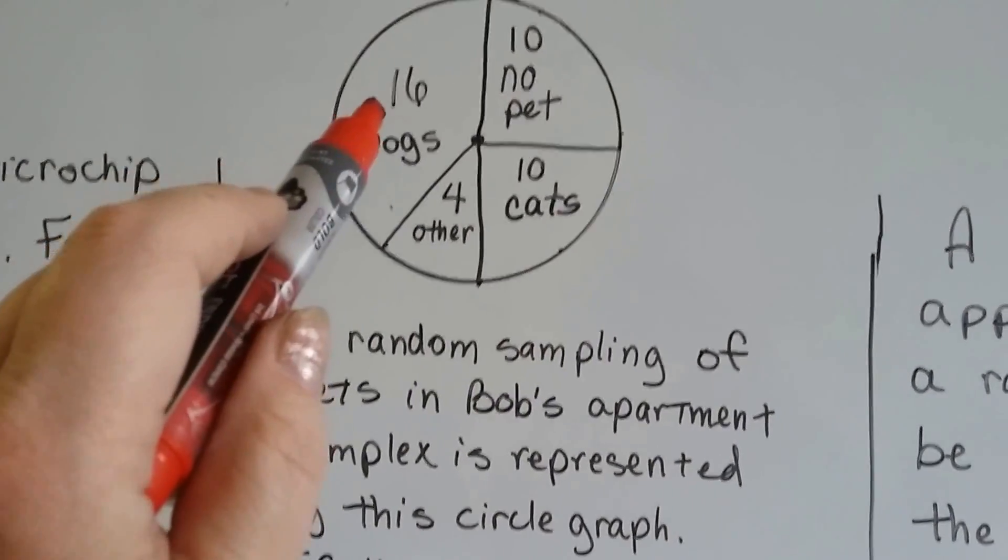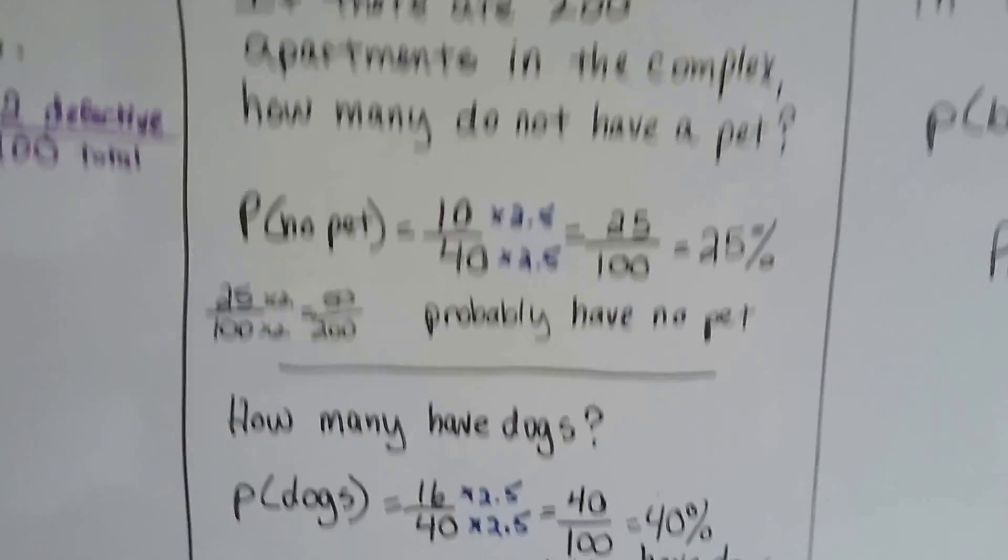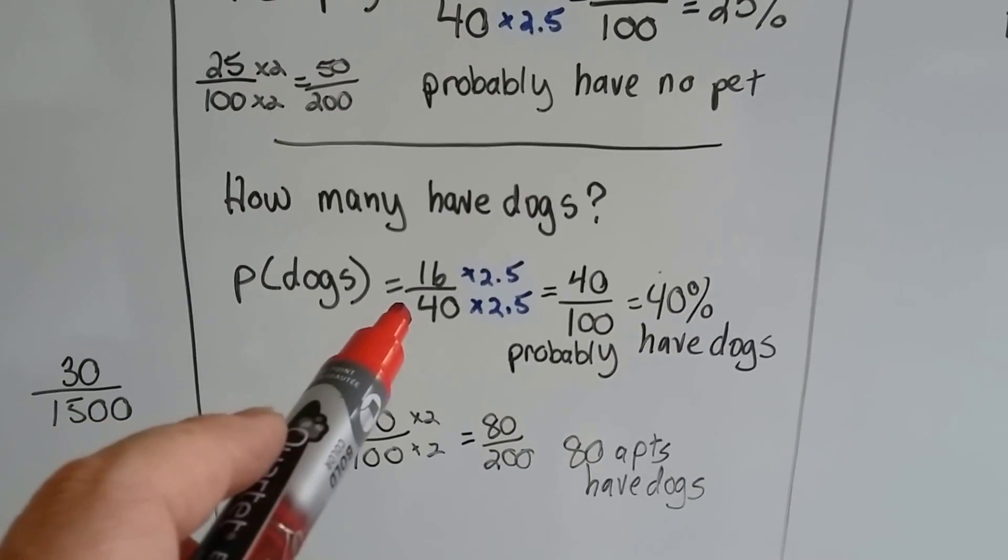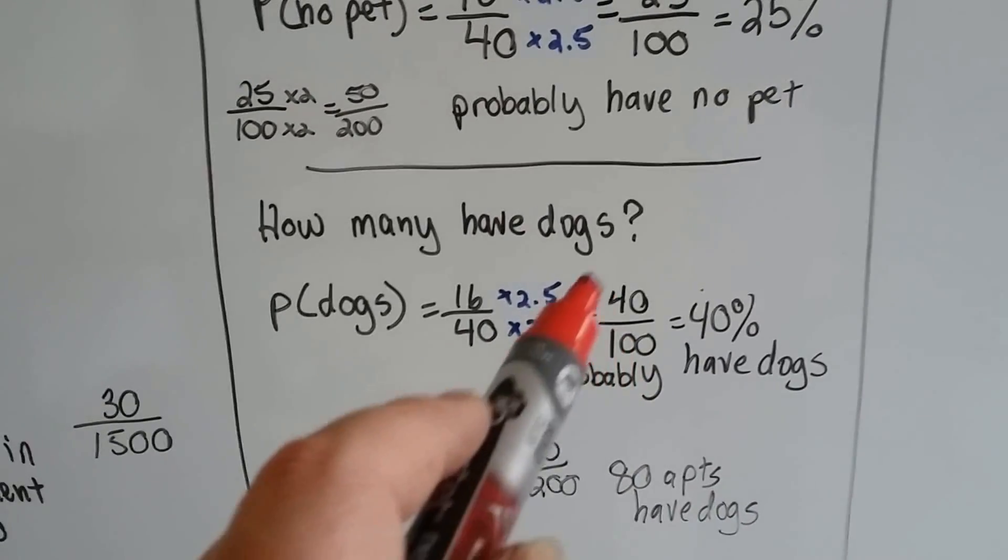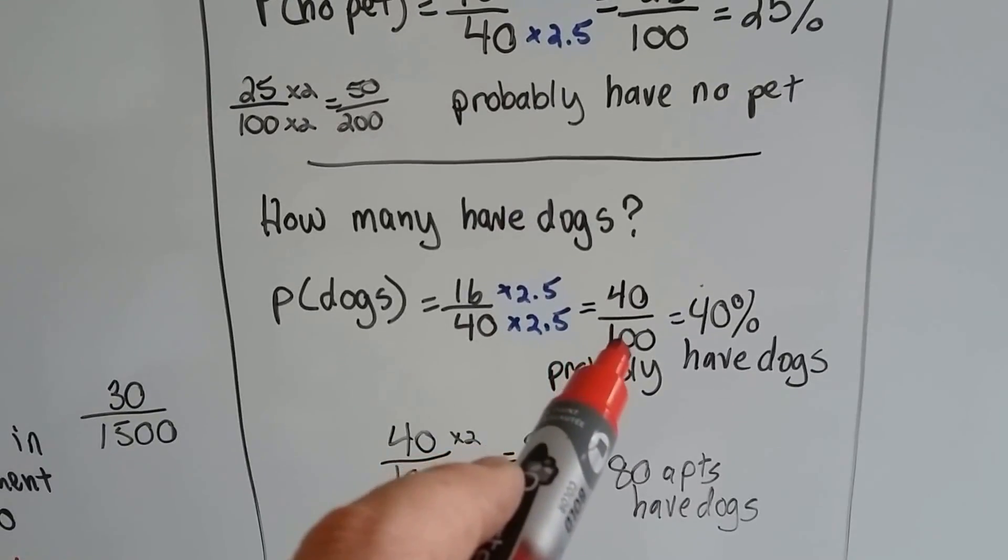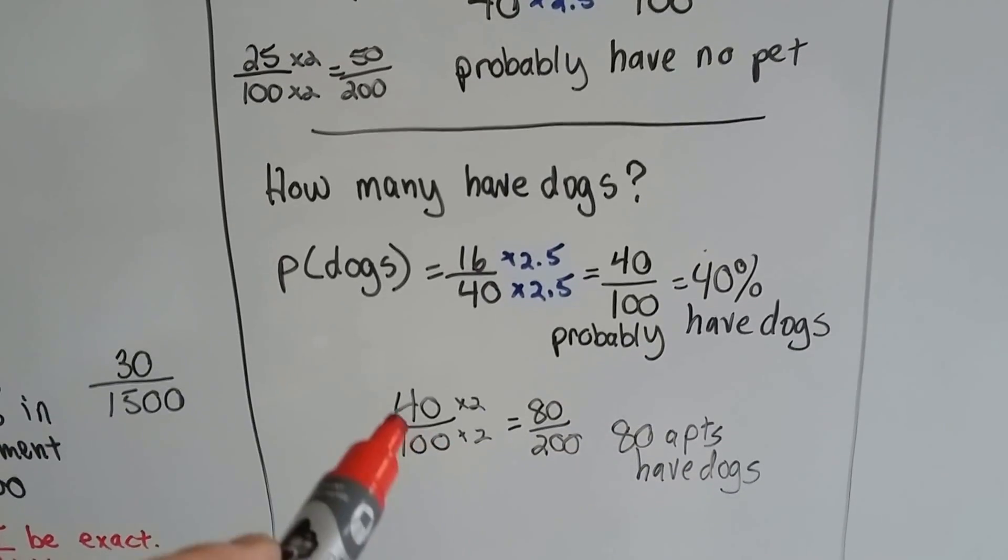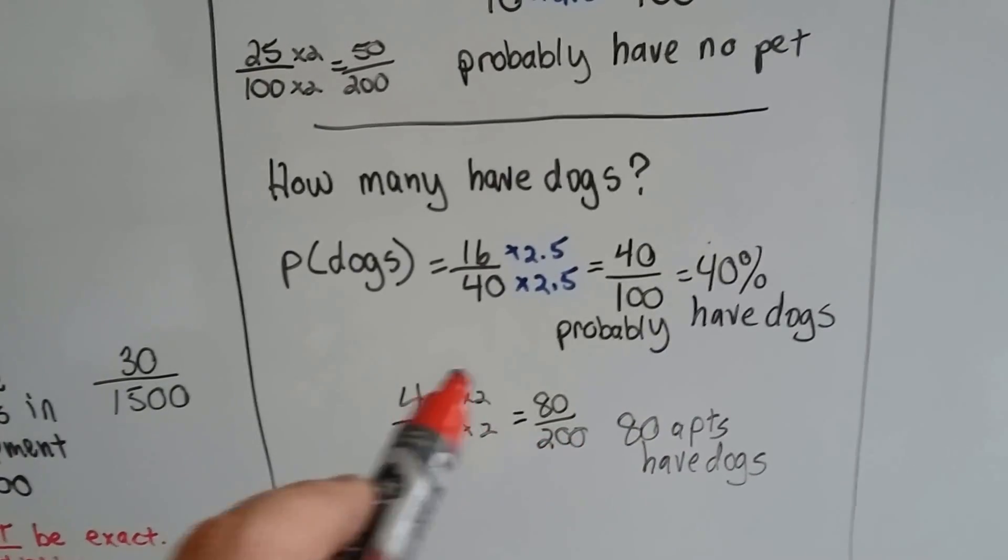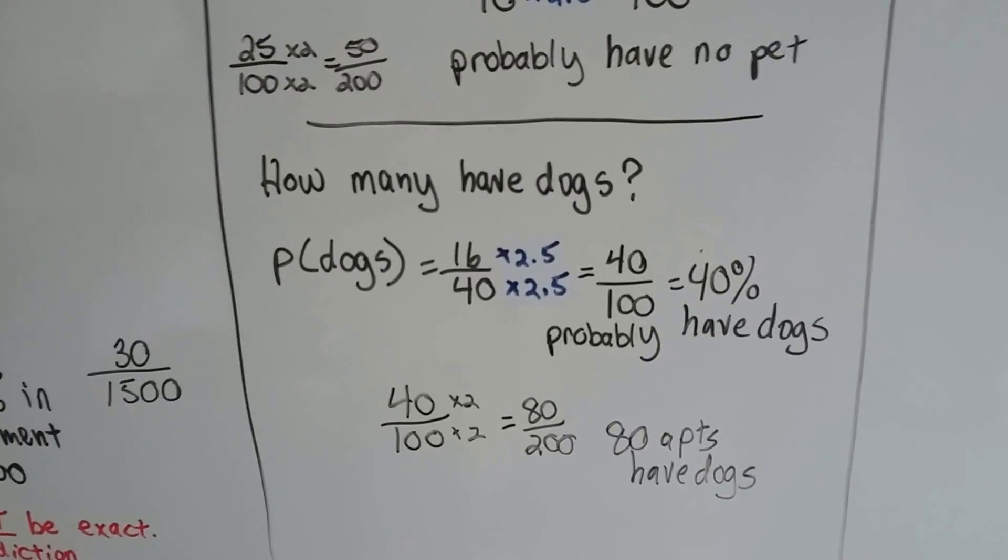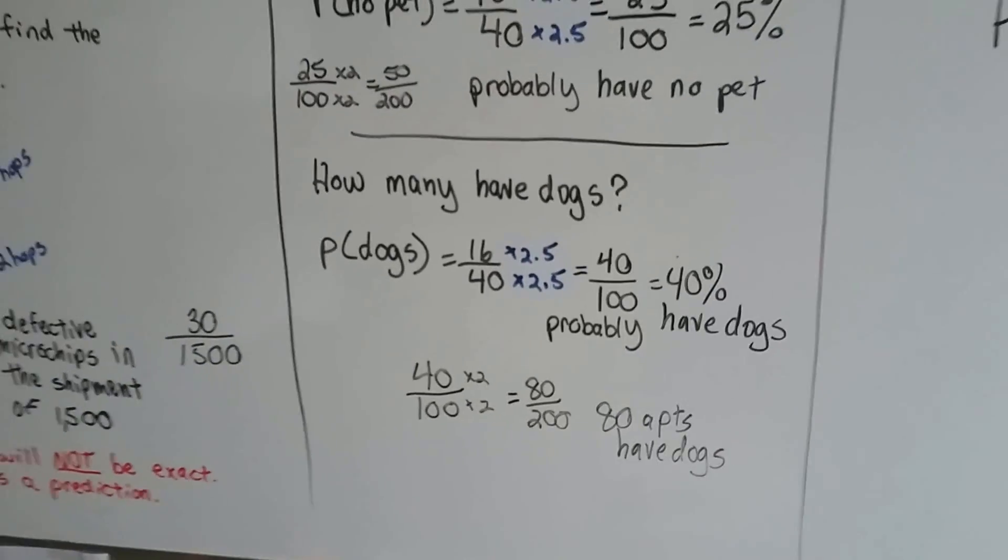How about dogs? It says that 16 out of the 40 have dogs. So all we have to do is multiply it by 2.5 to get to 100 for the denominator, and we know that 40 out of 100 have dogs, or 40%. Multiply those by 2 to get the denominator to 200, and we know 80 apartments have dogs. See how we did that?